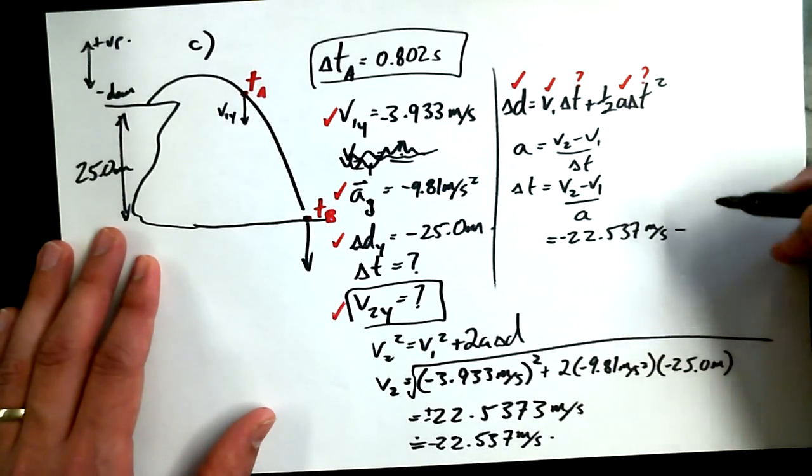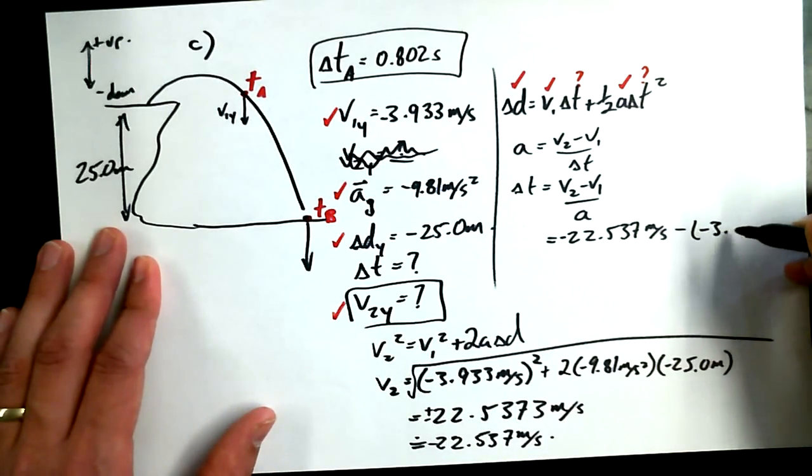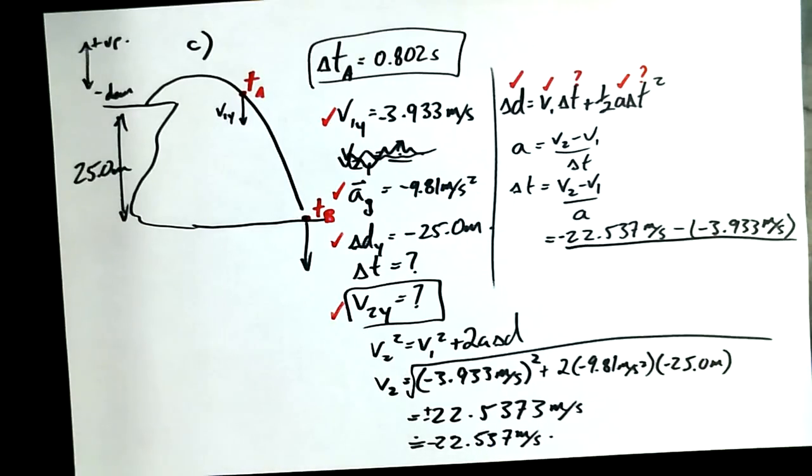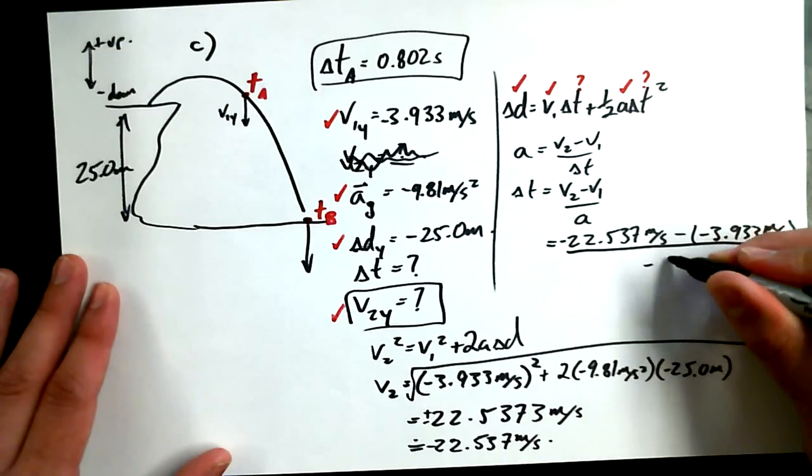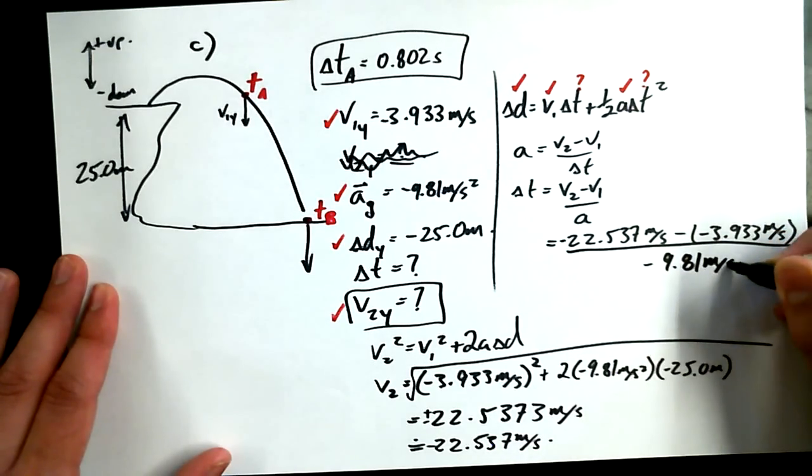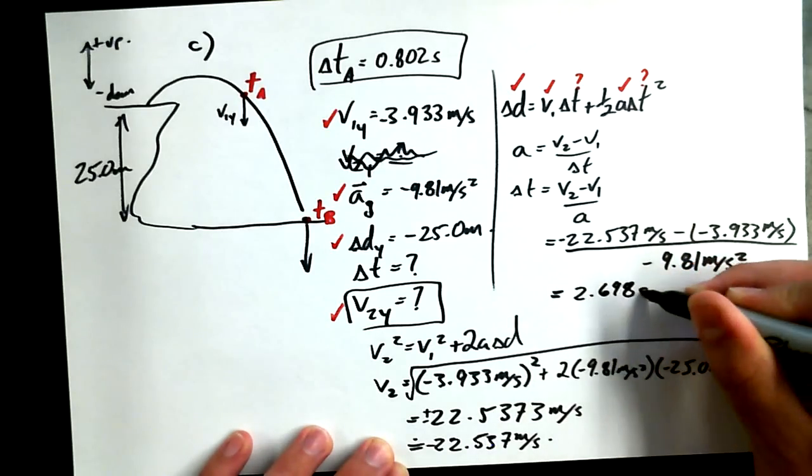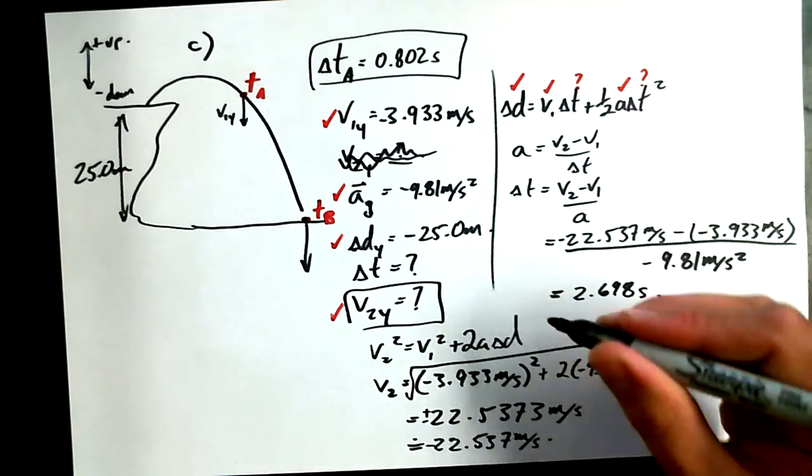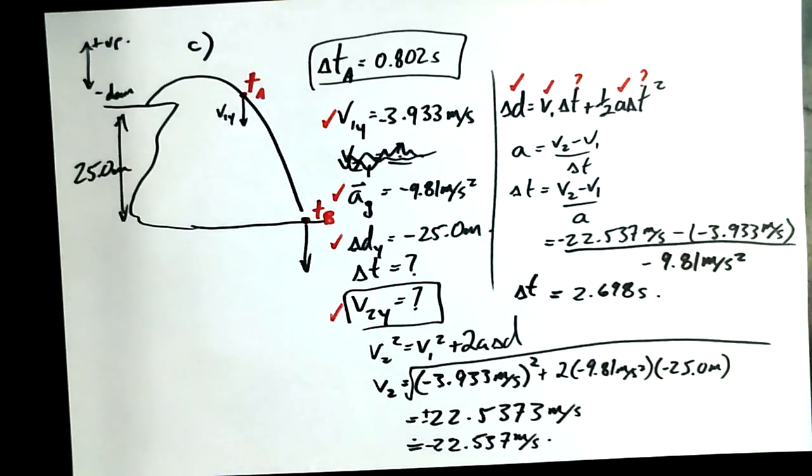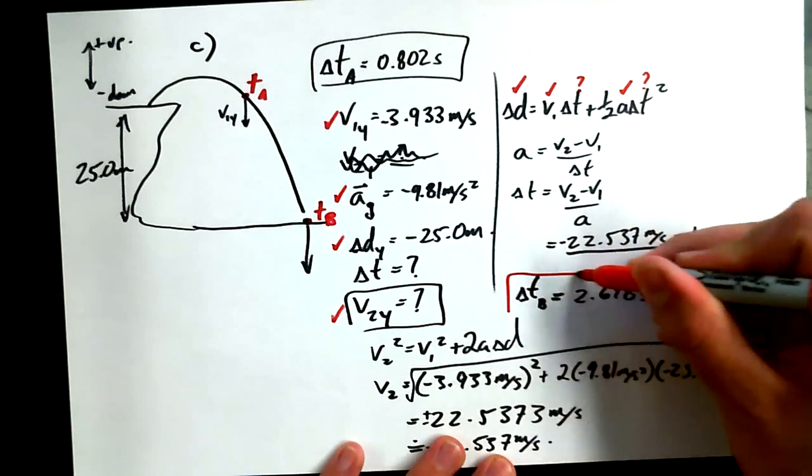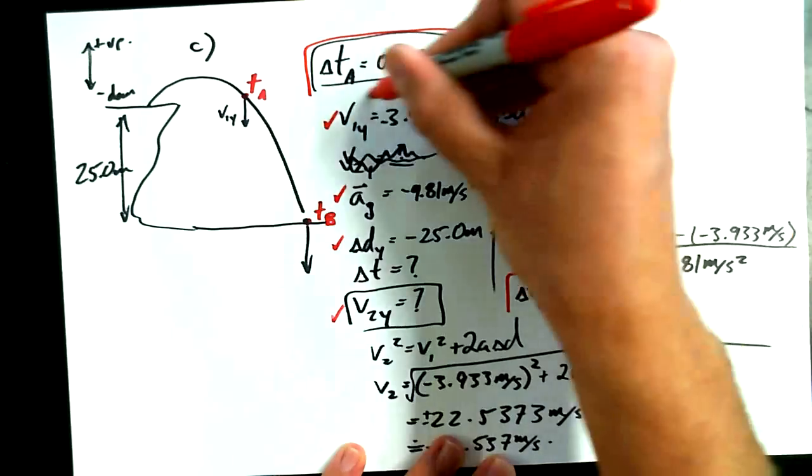Remember, there's admissible answers sometimes and there's inadmissible answers when you get these two-answer solutions for finding square roots. Anyway, the admissible answer is negative. Minus V1. The V1 was equal to negative, so minus the negative. People always forget about the plus or minus when they square root values. But it is important in the context of the story. Minus means something here. Minus V1 divided by negative 9.81 meters per second squared is equal to 1.896 seconds.